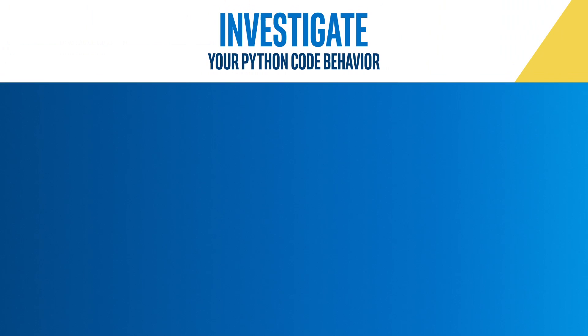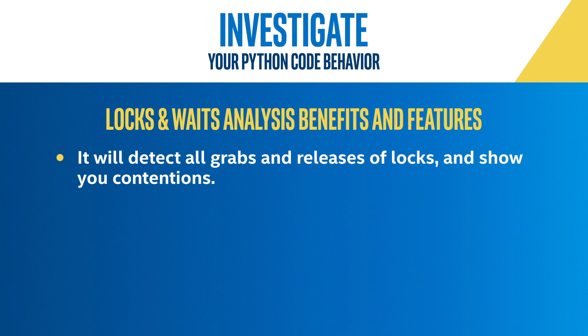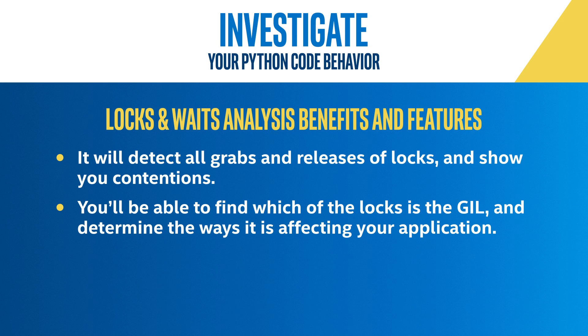Next, there's a locks and waits analysis. If you care more about latency than speed, or if you're just wondering about the infamous global interpreter lock, or GIL for short, try running locks and waits analysis. It will detect all grabs and releases of locks and show you contentions. You'll be able to find which of the locks is the GIL and determine the ways it is affecting your application.